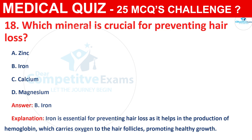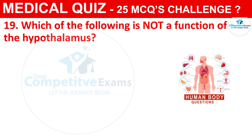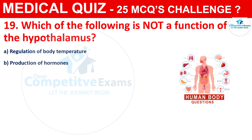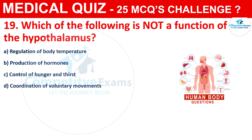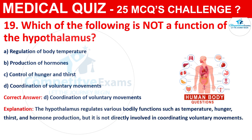Question 19: Which of the following is not a function of the hypothalamus? The options are Regulation of body temperature, Production of hormones, Control of hunger and thirst, or Coordination of voluntary movements. The correct answer is D, that is Coordination of voluntary movements. The hypothalamus regulates various bodily functions such as temperature, hunger, thirst, and hormone production, but it is not directly involved in coordinating voluntary movements.